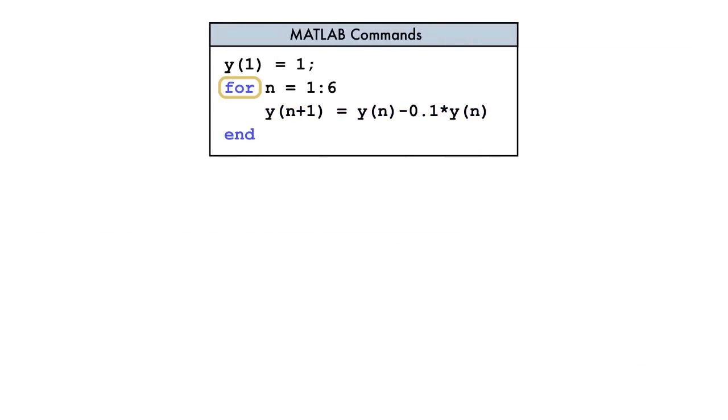The for loop starts with the keyword for followed by the syntax for defining a vector. This syntax creates a variable called a loop variable or iteration variable that takes on values in the vector one by one.